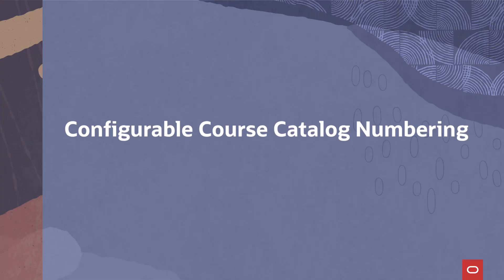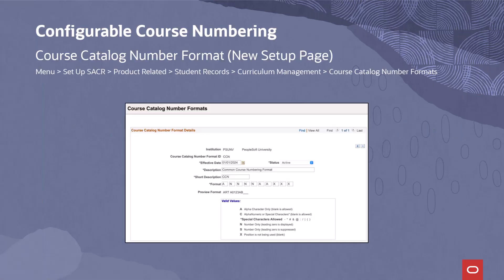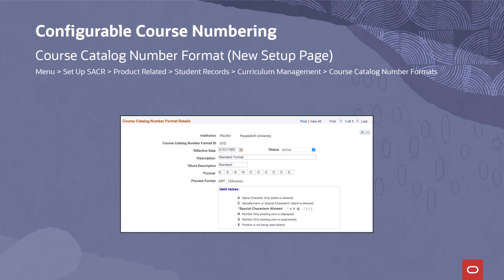We have delivered a new Configurable Catalog Number enhancement that will allow customers to create a new course catalog number format for specific courses. A new Course Catalog Number format setup page has been delivered to allow campuses to establish various alternative course catalog numbering formats to be used on individual course catalog offerings. The standard course catalog number format, STD, has been delivered with this enhancement, representing the current delivered catalog number field formatting.